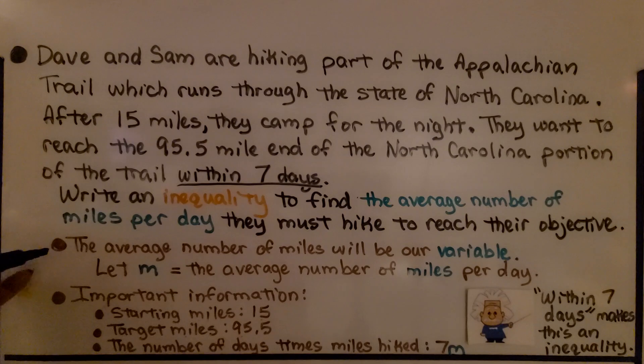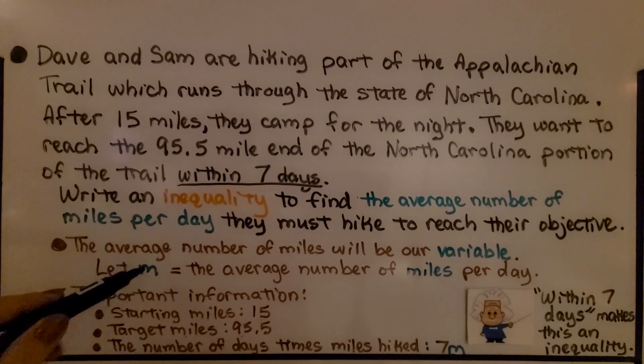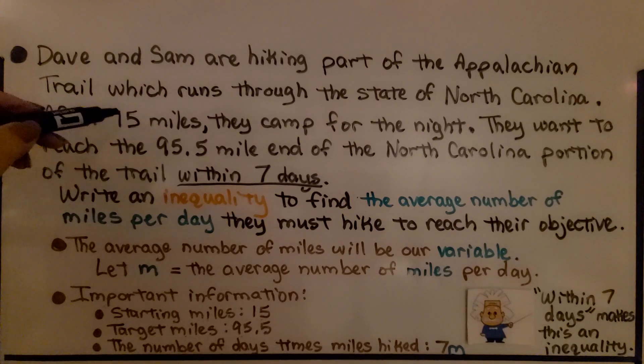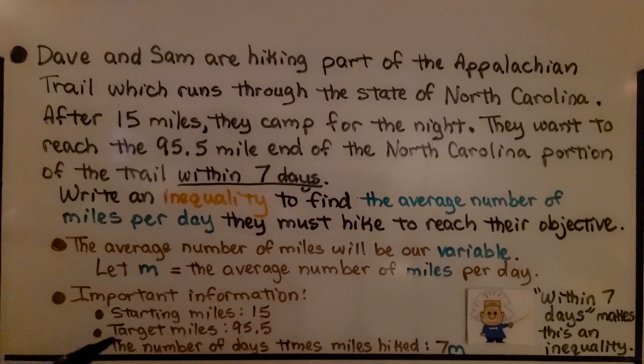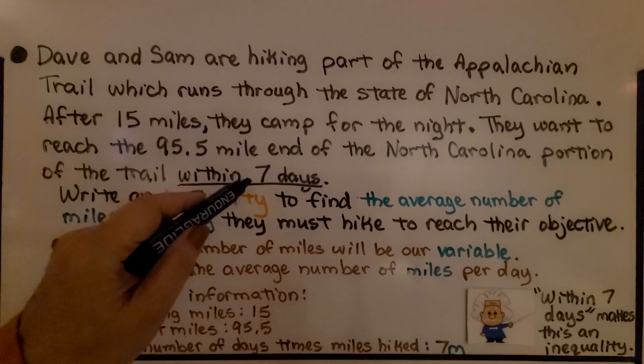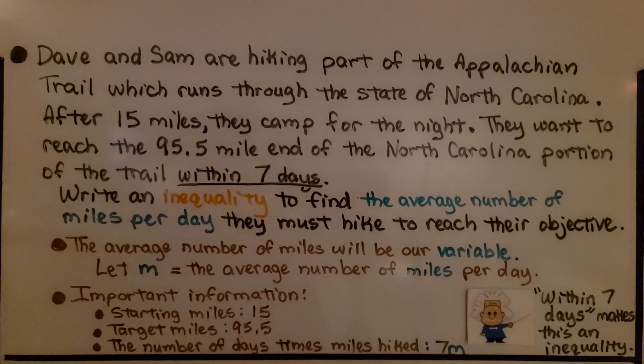So the average number of miles will be our variable. We're going to let M equal the miles per day, the average number of miles per day. The important information is their starting miles is at 15, because that's where they're camped for the night. The target miles is 95 and 5 tenths. And the number of days times the miles hiked is going to be the number of days is seven. And the miles hiked is going to be M. So within seven days makes this an inequality. They have to do it sometime within seven days. They could do it in six. They could do it in five. But they need to do it before seven days is over. So that's the maximum that it could be.